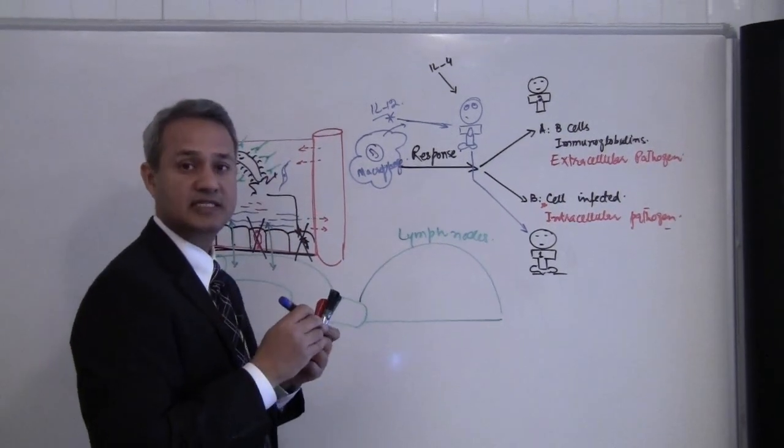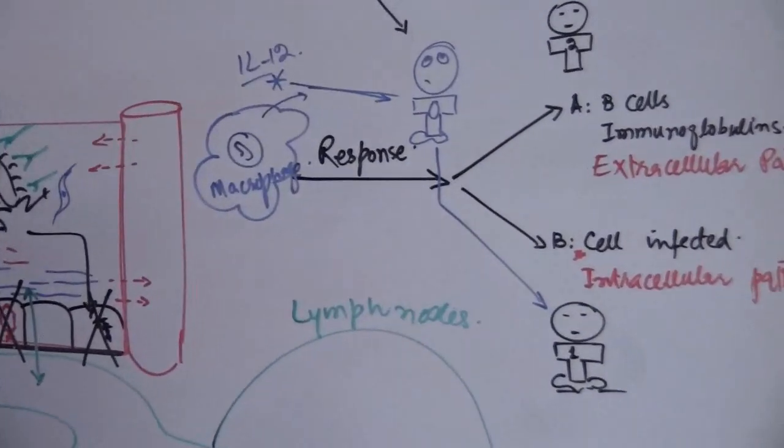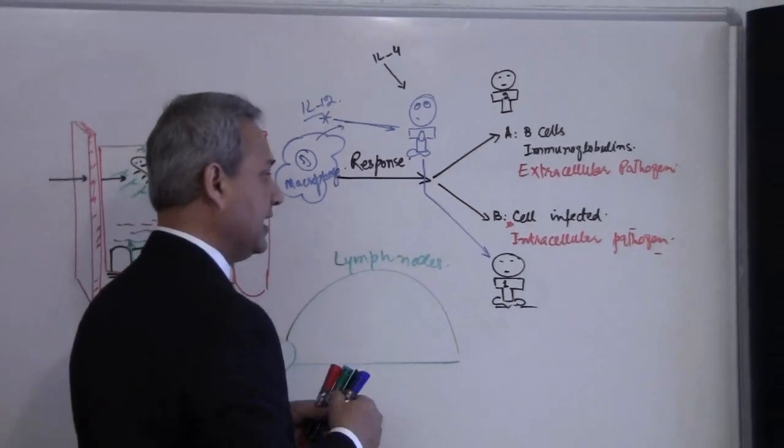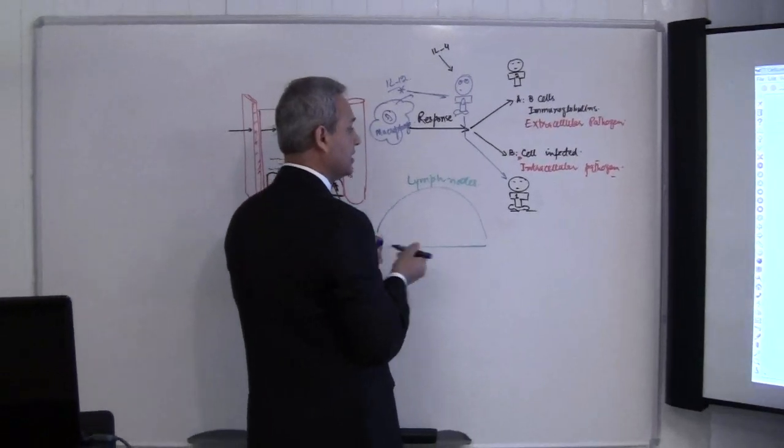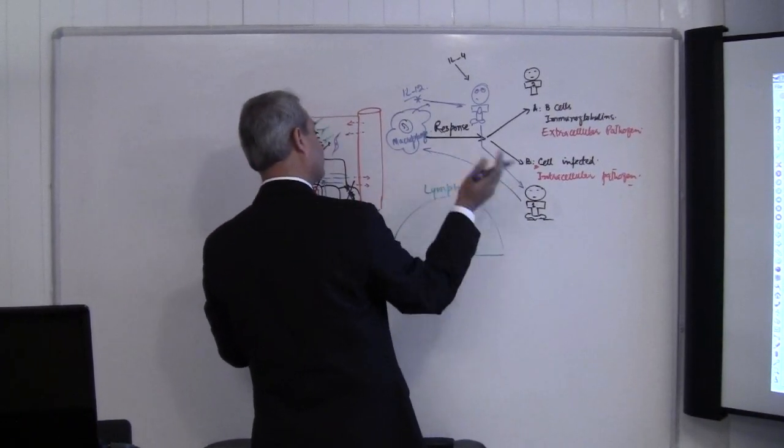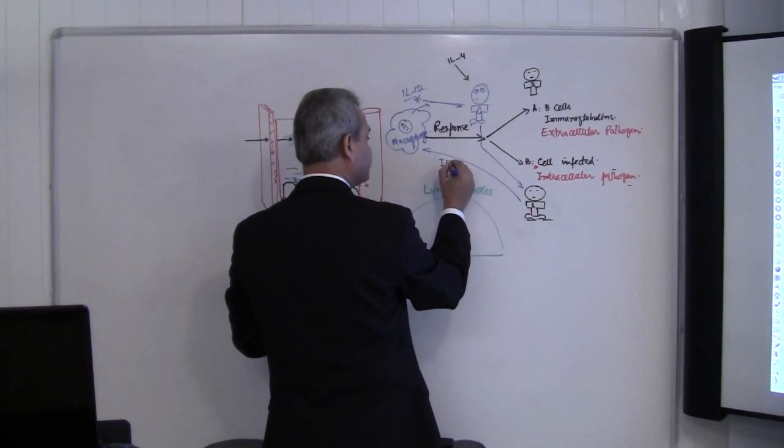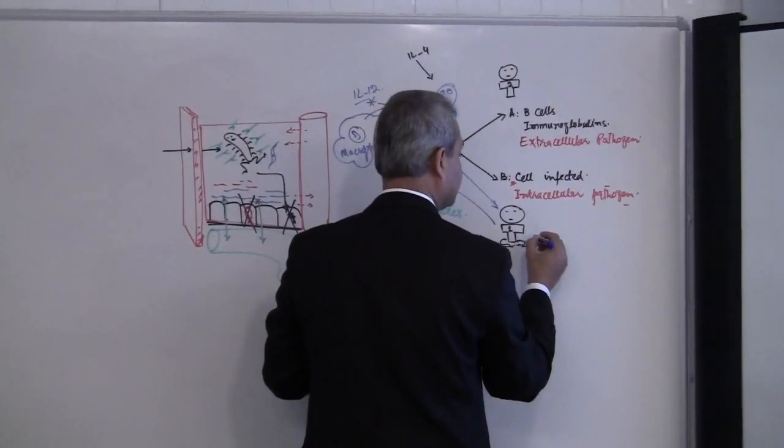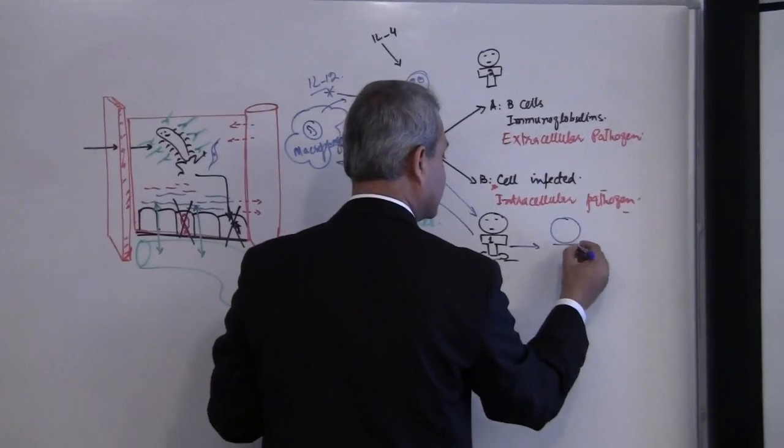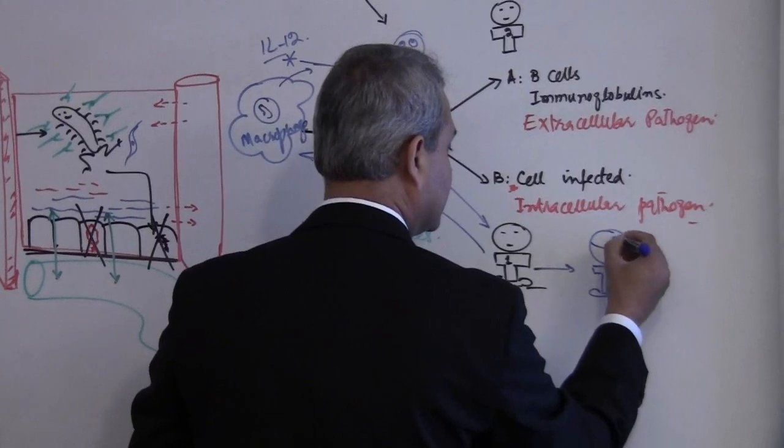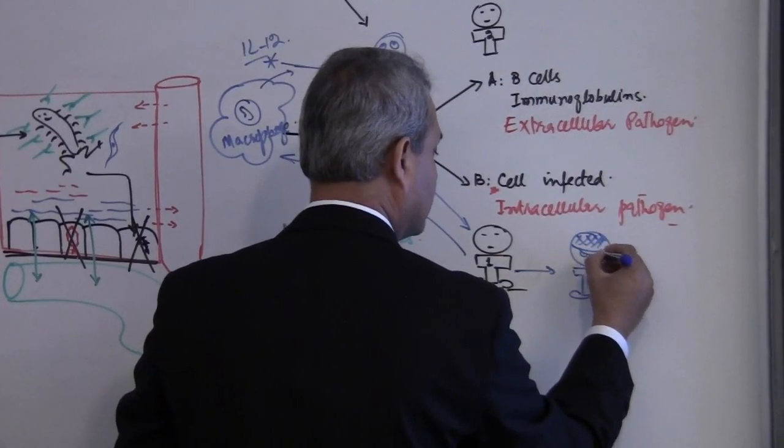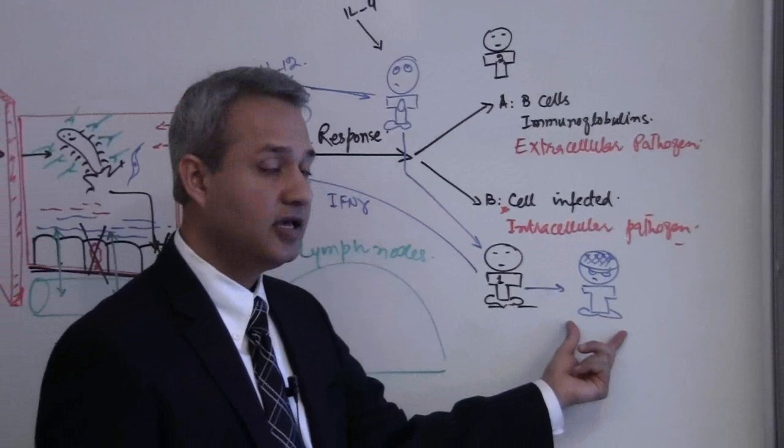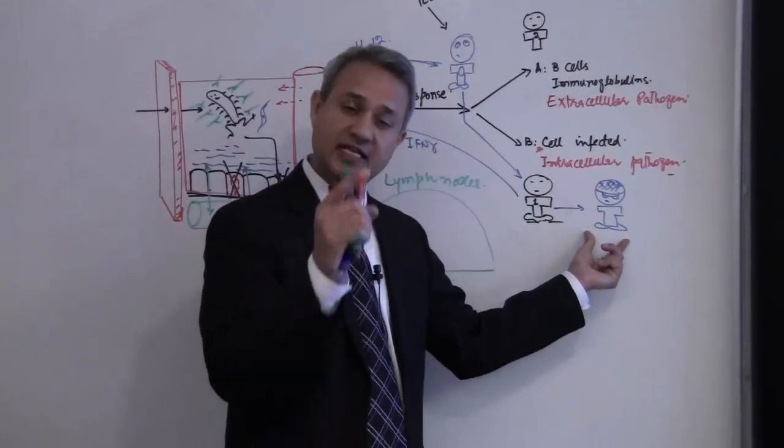so macrophage is telling the acquired system to bring the cytotoxic response on. Macrophage is telling, IL-12 will convert T helper 0 into T helper 1 type cell. The T helper 1 type cell would then release interferon gamma, which would activate the macrophage itself. And also the T helper 1 would cause the cytotoxic T cells to become active. So cytotoxic T cells are the soldier cells, the angry cells that are going to kill the cells which contain the pathogen.